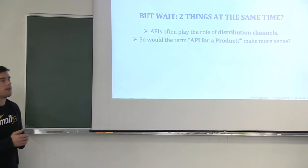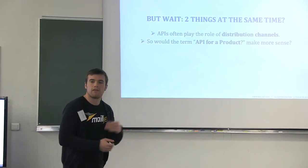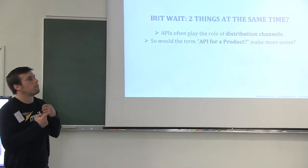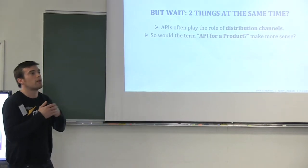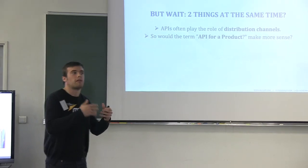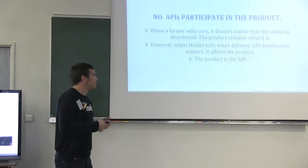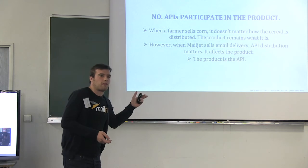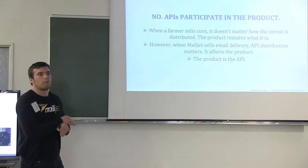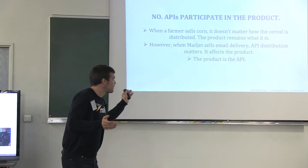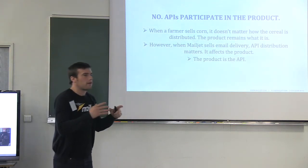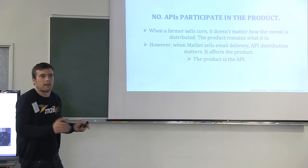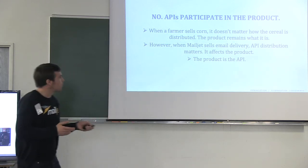There is another thing about APIs: it's your distribution channel. There was a question — how can it be your product and the distribution channel at the same time? Maybe we should use the term API as a product rather than API as a project, because the API is a means for your product rather than an end. But because of the digital age, things have changed. Take a concrete example: the farmer that sells corn — no matter how the corn is distributed, it remains corn. It's not the same thing for MailJet. We sell email delivery, and the API distribution matters and affects the product. It's completely related, and the product will be completely different if there were no API. The product is the API.